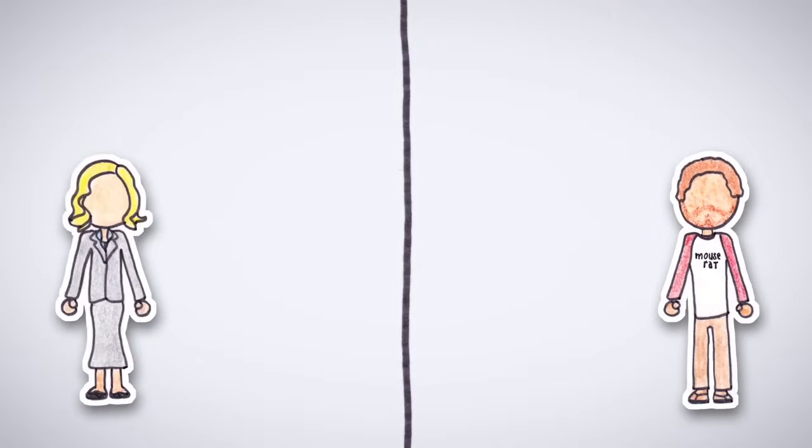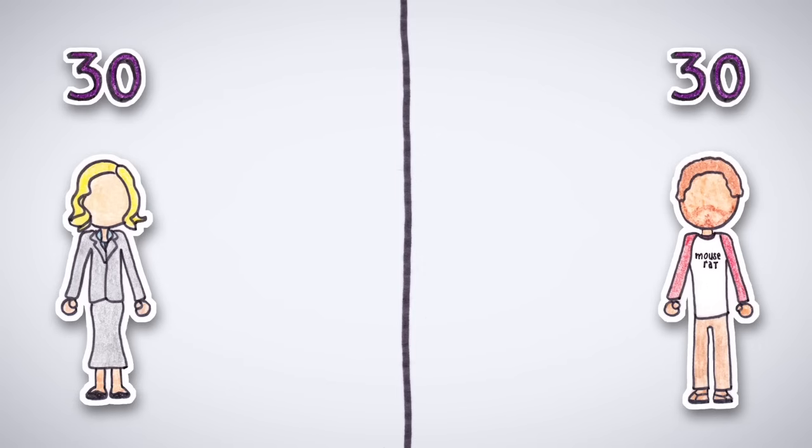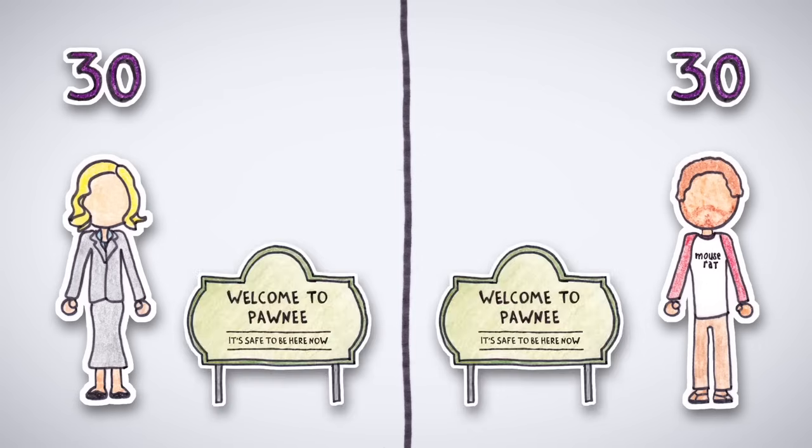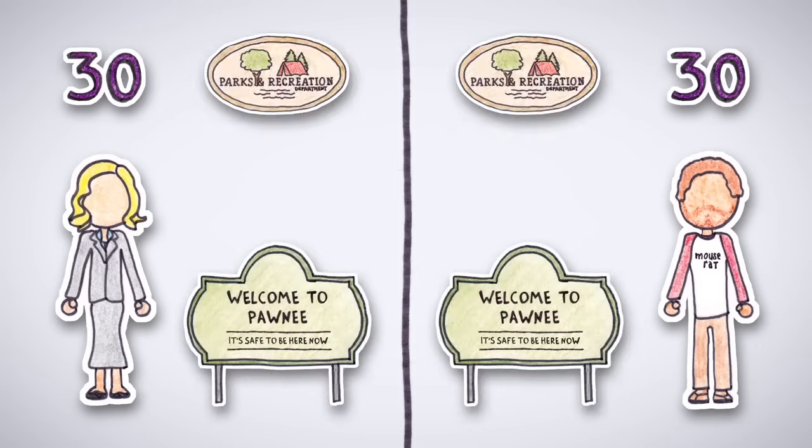Here are two friends, Leslie and Andy. Leslie and Andy are both 30 years old, living in the same city, working at the same place, and earning the same salary.